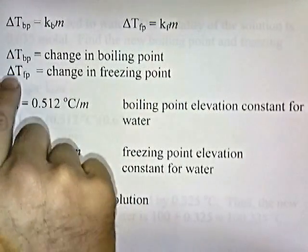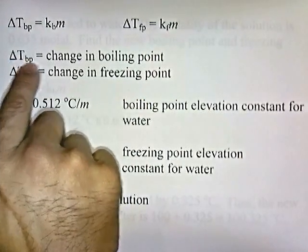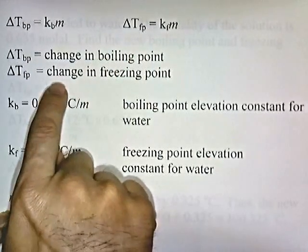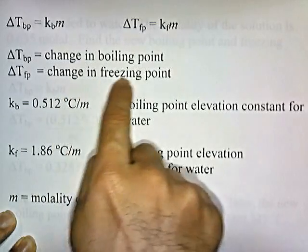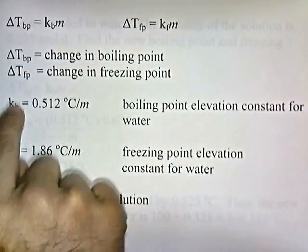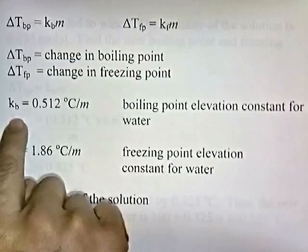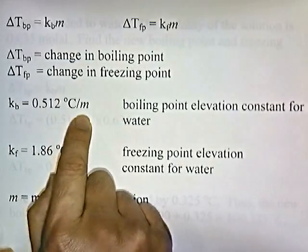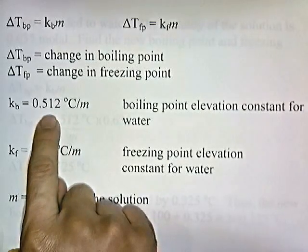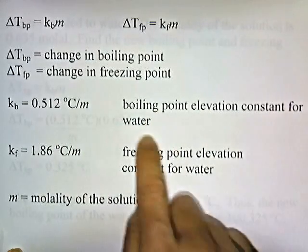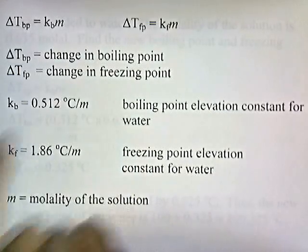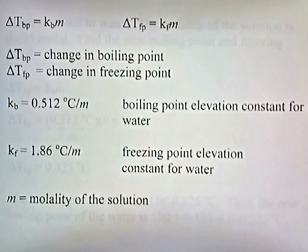The change in temperature of the boiling point tells us how much the boiling point goes up. The change in temperature of the freezing point tells us how much the freezing point goes down. KB in this formula is a constant — it's 0.512 degrees Celsius per molal. This is the boiling point elevation constant for water. If we used a different substance, KB would have a different value. Sometimes the solvent is benzene, and benzene has a different boiling point elevation constant.